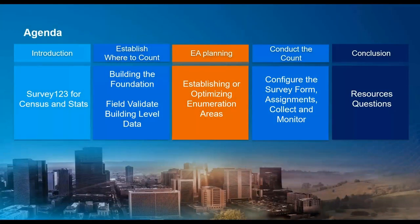We're going to turn cameras off as we're talking — some of us suffer bandwidth issues. We'll come back on camera at the end for the Q&A session. What I want to do is go over the agenda and then dive right in. Today we'll start talking about Survey123 for Census and Statistics, covering both pre-enumeration planning and the actual enumeration. We'll also touch on optimization of enumeration areas, walking through the full workflow, and then open it up for questions with a couple of poll questions along the way.